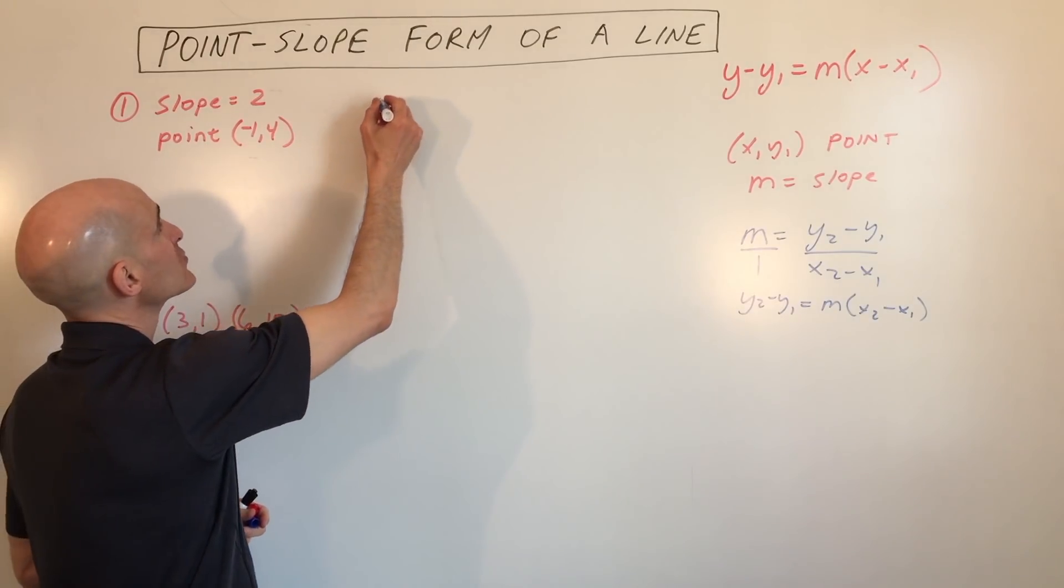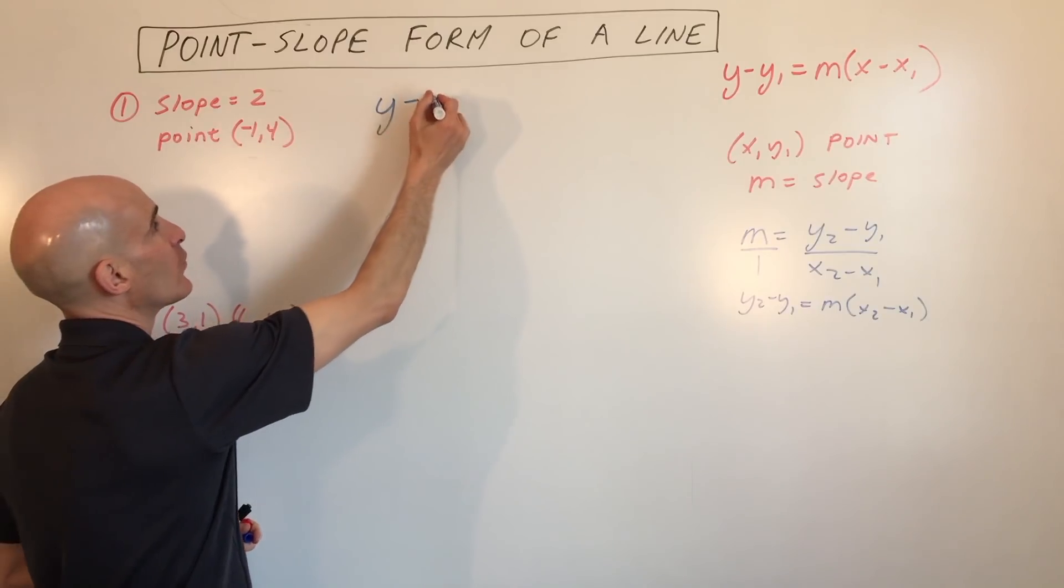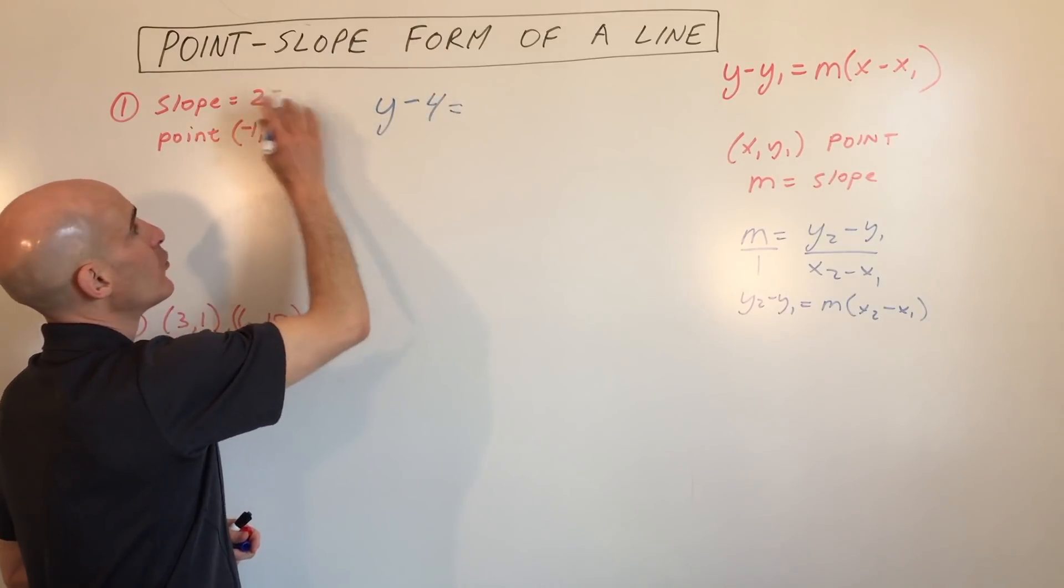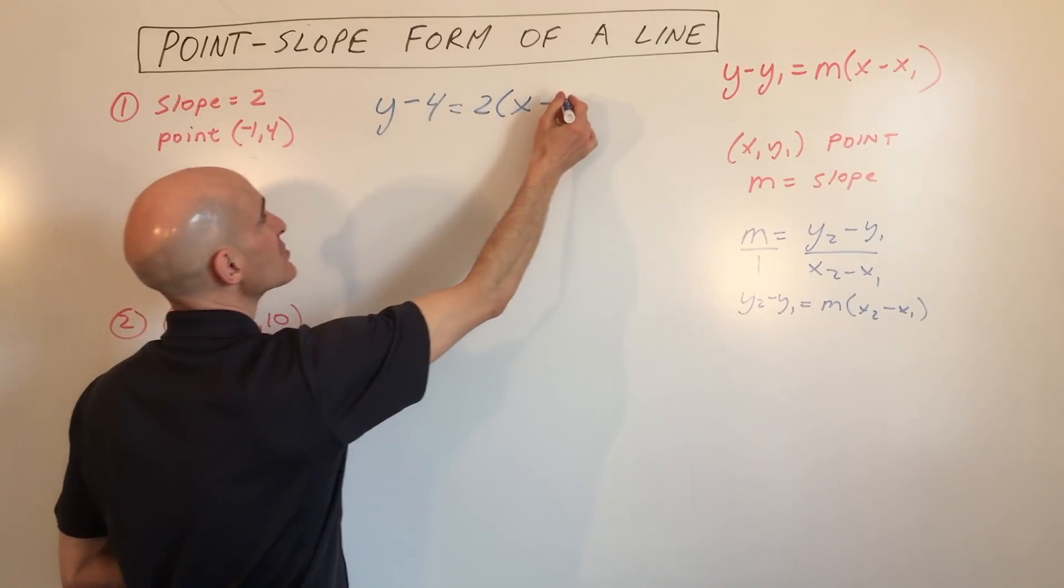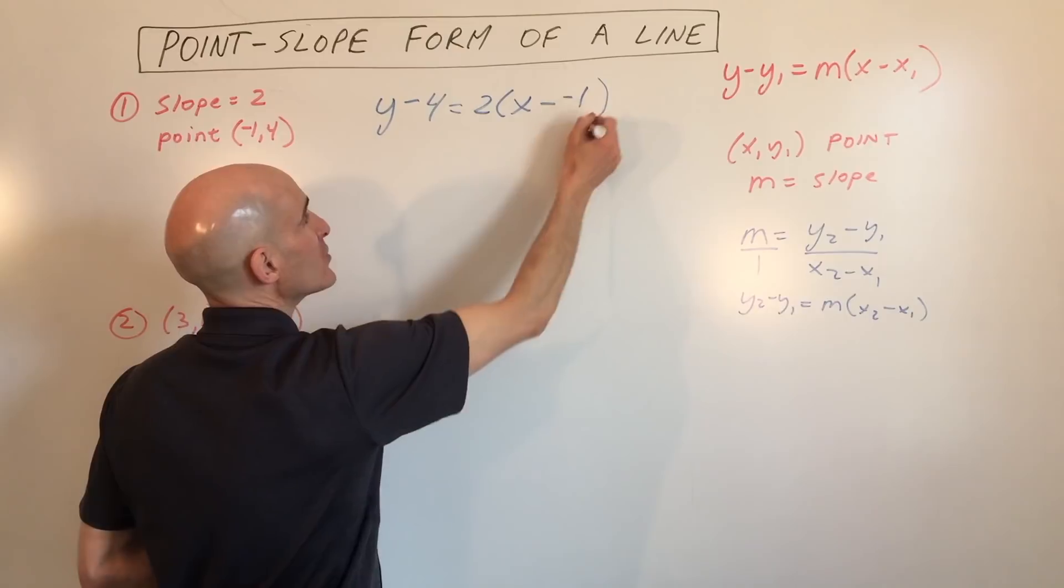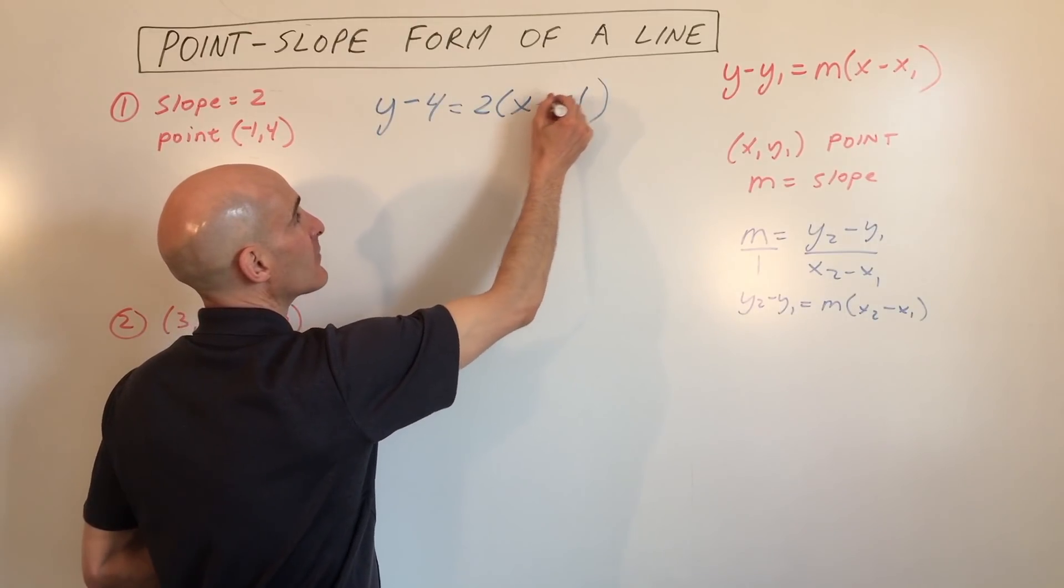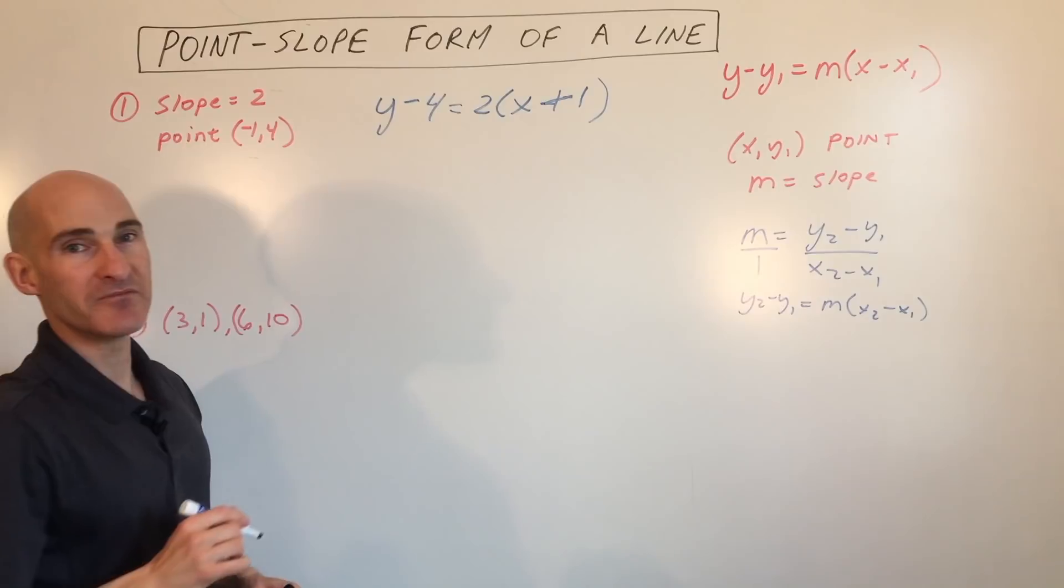We're going to do y minus the y coordinate, which is 4, equals the slope, which is 2, times x minus the x coordinate, which is negative 1. But when you subtract a negative, it's really just like adding a positive, so I'm just going to write that as plus 1.